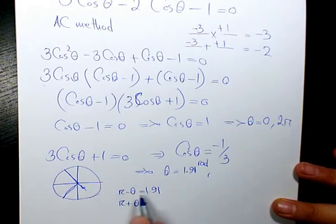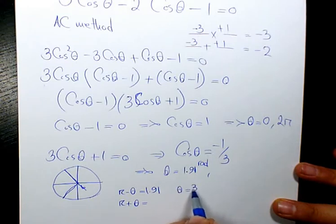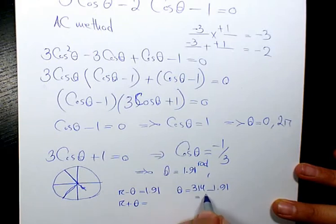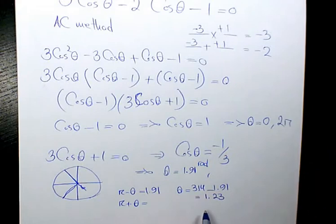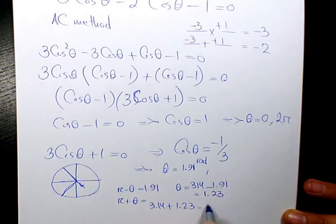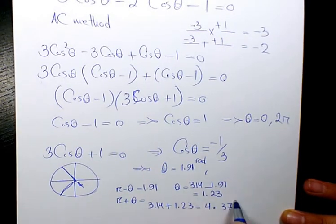So then I need to find it for theta. Theta is going to be 3.14 minus 1.91. That will be 1.23, so then I need to add it here. π is 3.14 plus 1.23, that will give you 4.37 radian.